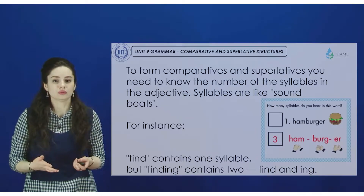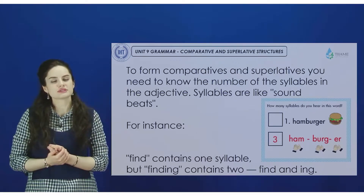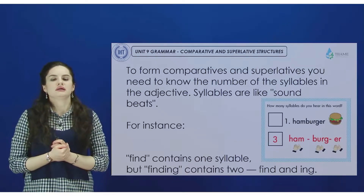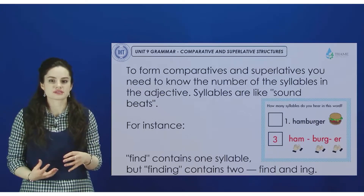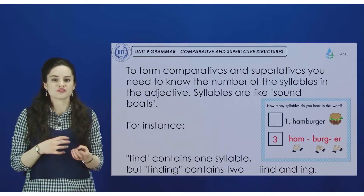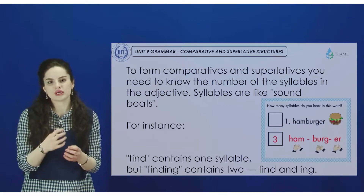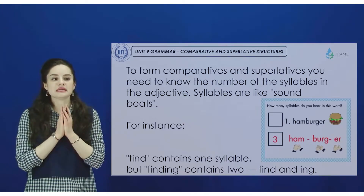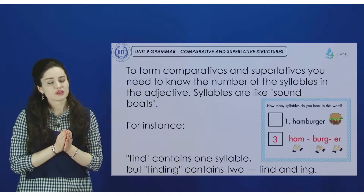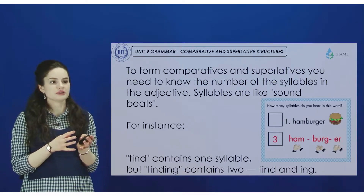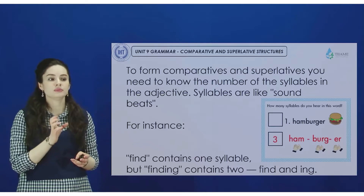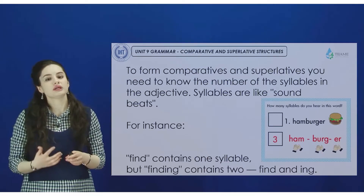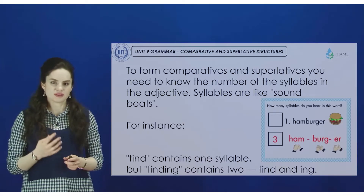First of all, what should you know? From your school days, I think you know that comparative and superlative forms are created by some additions — some suffixes. In order to understand what you should add, you need to analyze the word itself. You should understand how many syllables the word has. A syllable is a sound unit. For example, the word 'hamburger' has three syllables: ham, berg, and er.